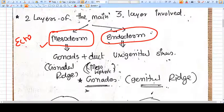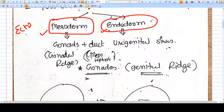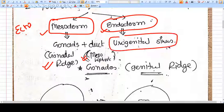Mesoderm makes gonadal ridge and mesonephric duct, and endoderm makes urogenital sinus. Again, mesoderm makes two different parts: genital ridge or gonadal ridge, and mesonephric duct.